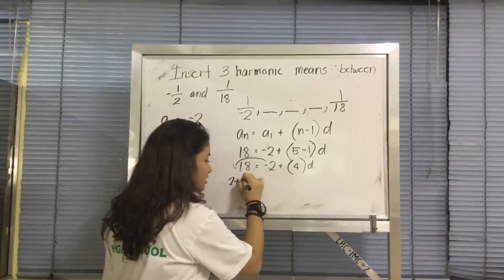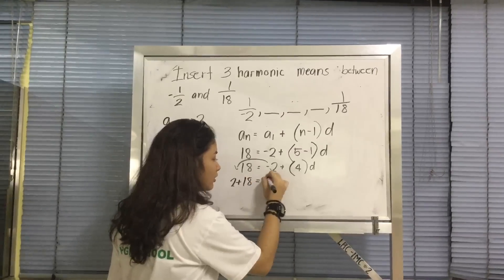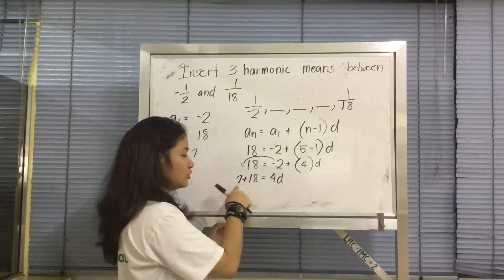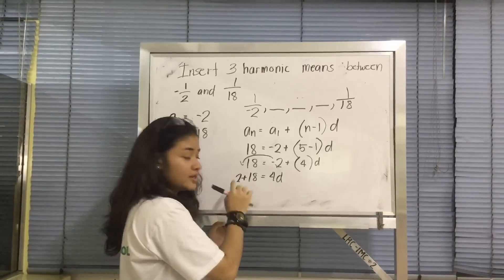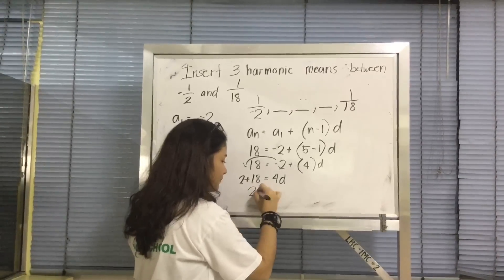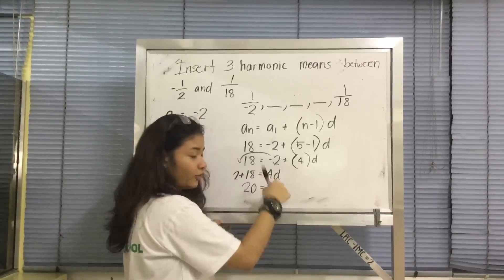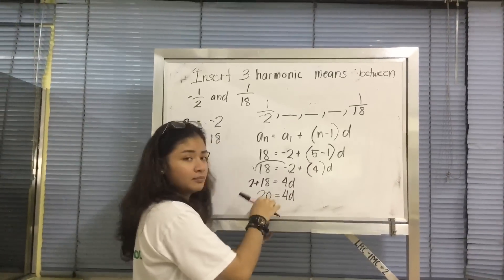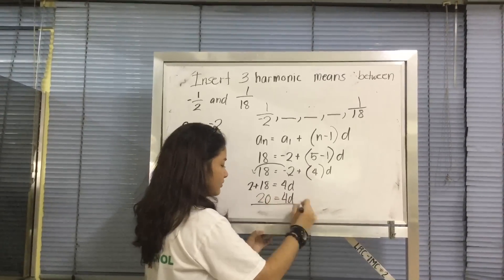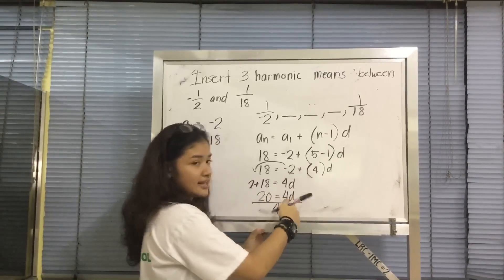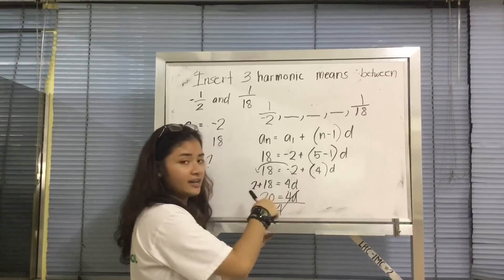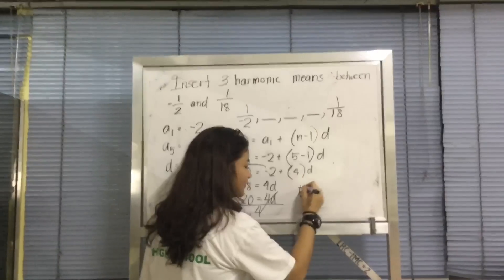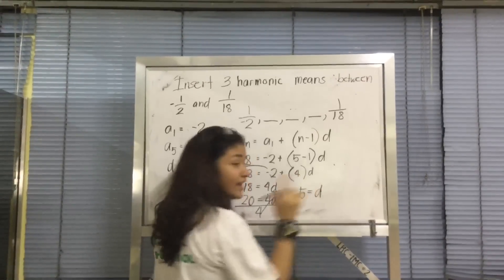2 plus 18 is equal to 4d. So now you add 18 and 2. So 18 plus 2 is equal to 20. Then, that equals 4d. Now you divide both sides by 4. Then cancel 4 and 4. Then divide 20 by 4 is 5 equals d.